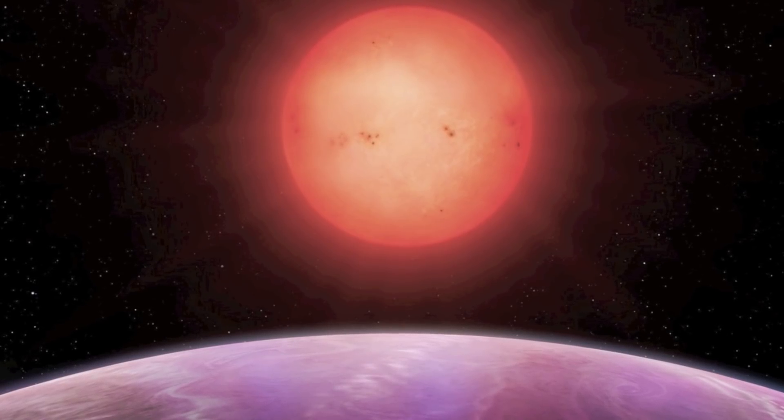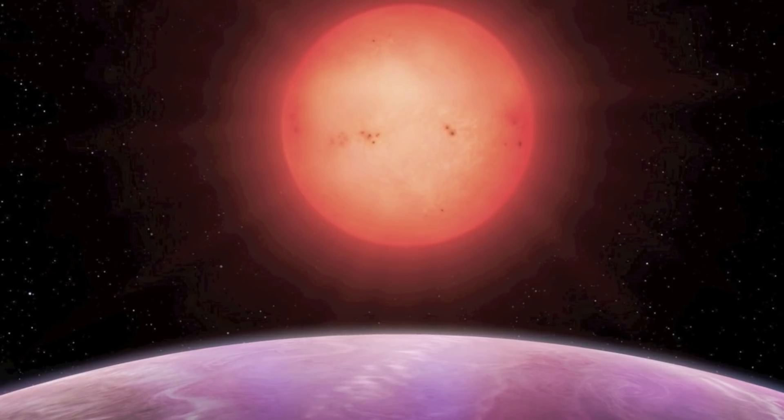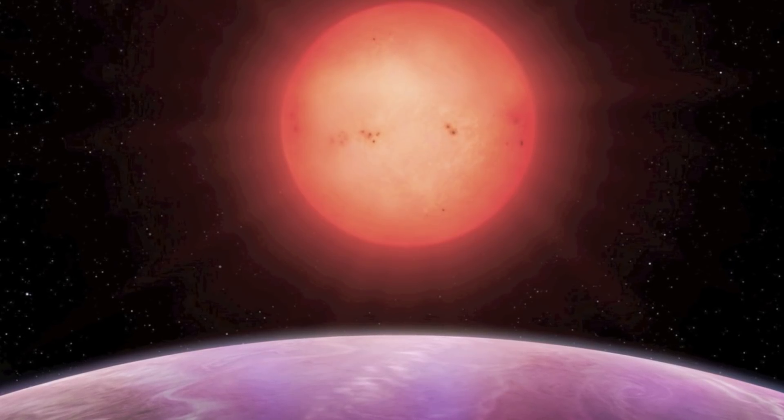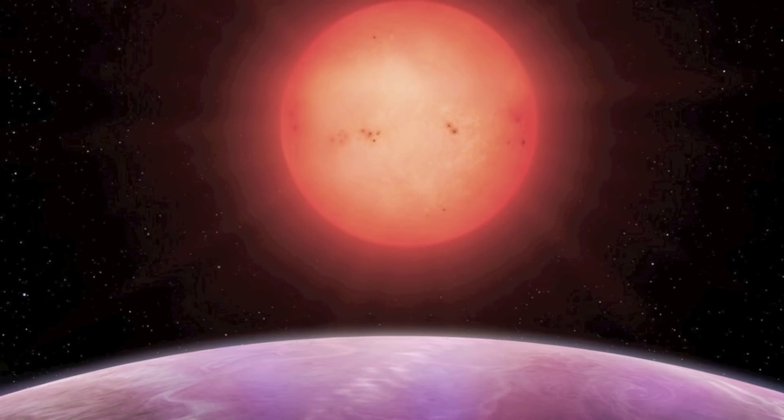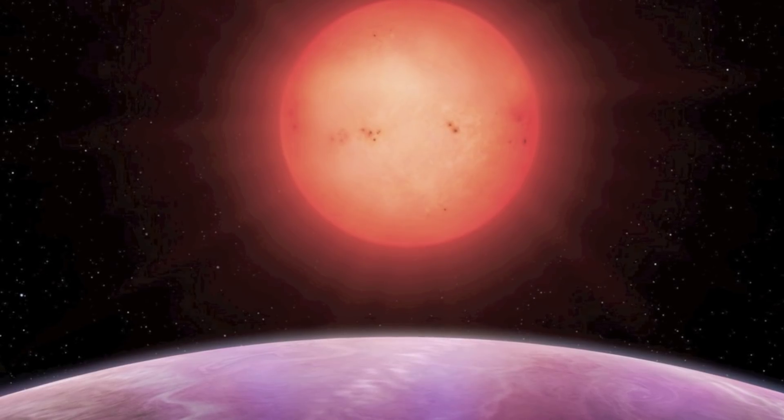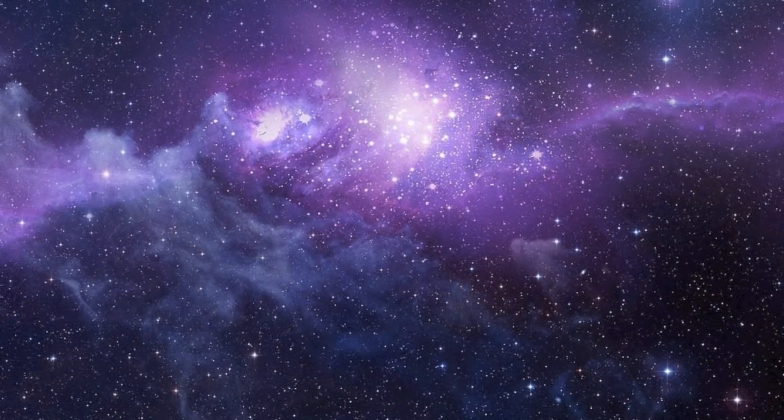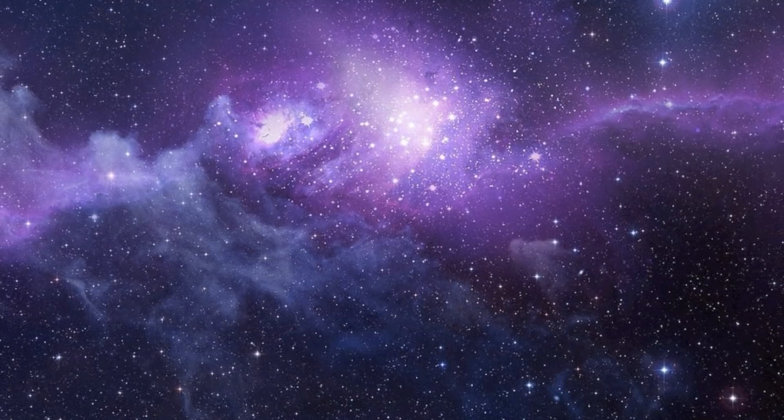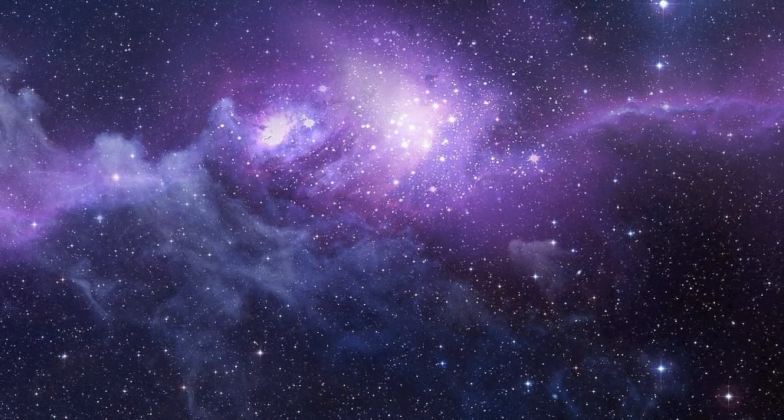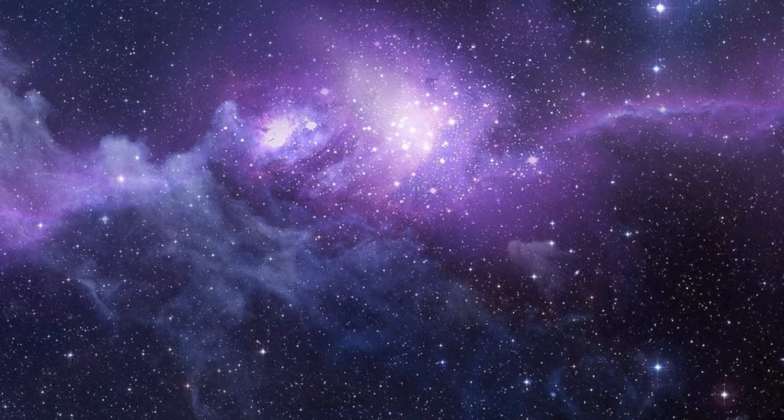The existence of the monster planet NGTS-1b defies the theories of planetary formation that affirmed that a planet of this size could not be formed around such a small star. According to these theories, small stars can easily form rocky planets but do not accumulate enough material to produce planets the size of Jupiter.